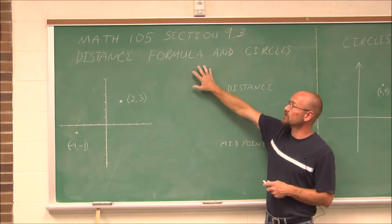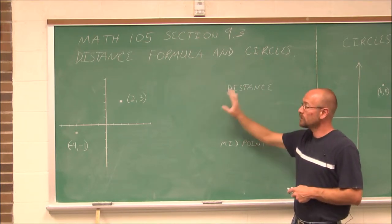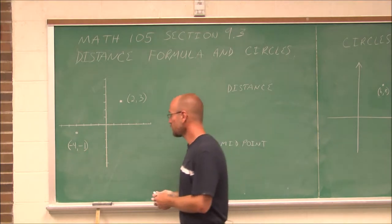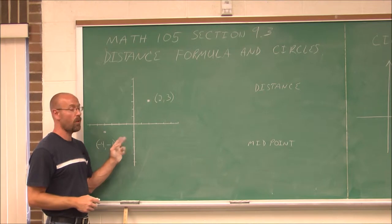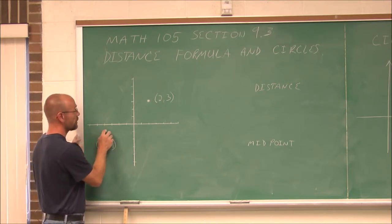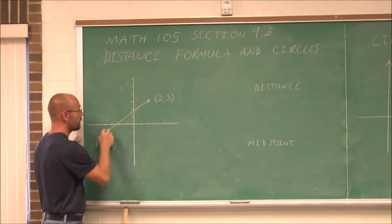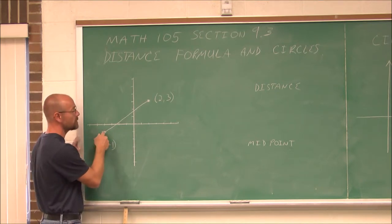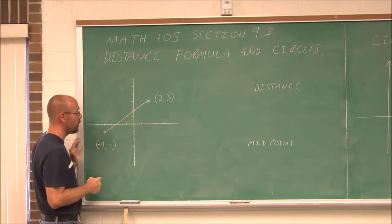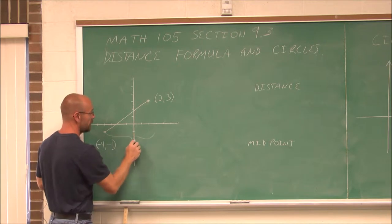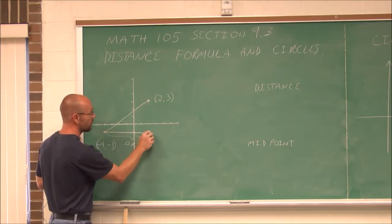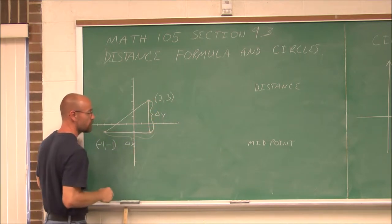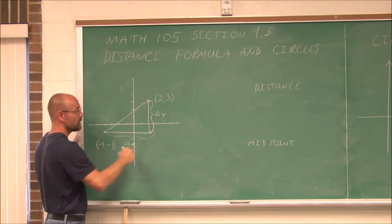You might think, what does the distance formula and midpoint have anything to do with a circle? Let's take a look at two points. We have a point (2, 3) and a point (-4, -1). If I want to find the distance between these two points, I could go straight across from one point to the other. Since it's on a Cartesian coordinate graph, we could think about the x distance over to here and the y distance up to the point. This makes a right triangle.